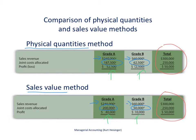With the physical quantities method, grade A lumber had a profit of $52,500 and grade B lumber had a loss of $2,500. The sales value method shows grade A lumber with a profit of $40,000 and grade B lumber was profitable at $10,000. These are the two different ways to allocate joint costs to products.